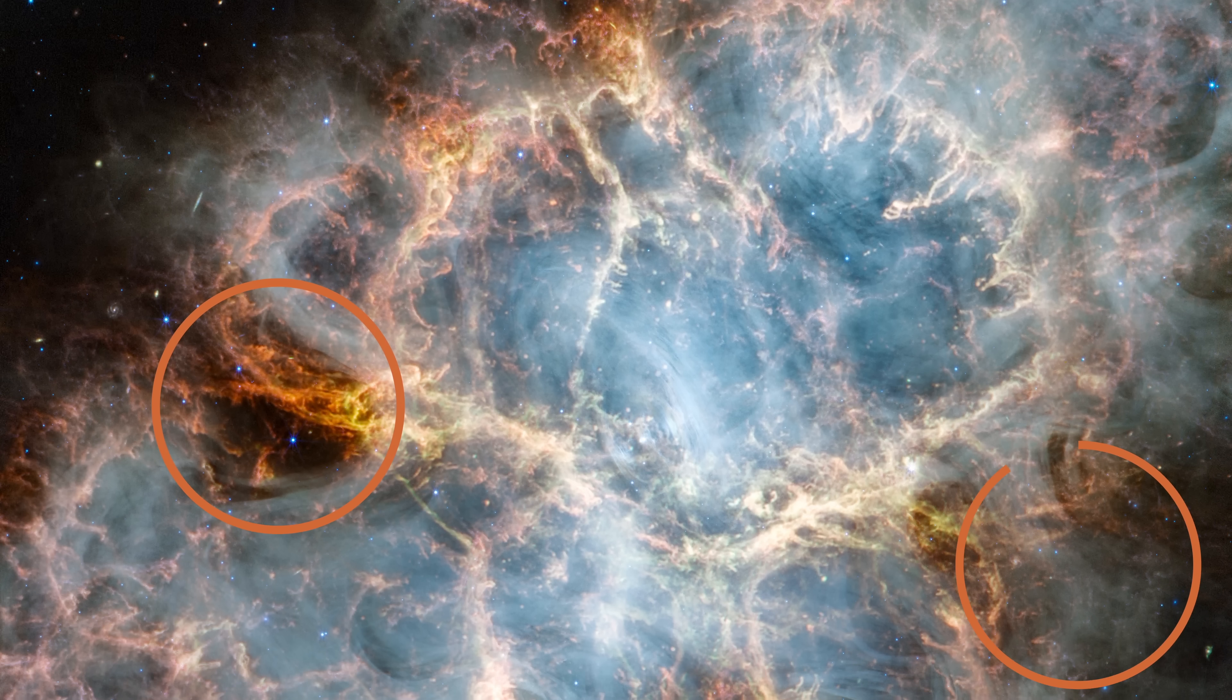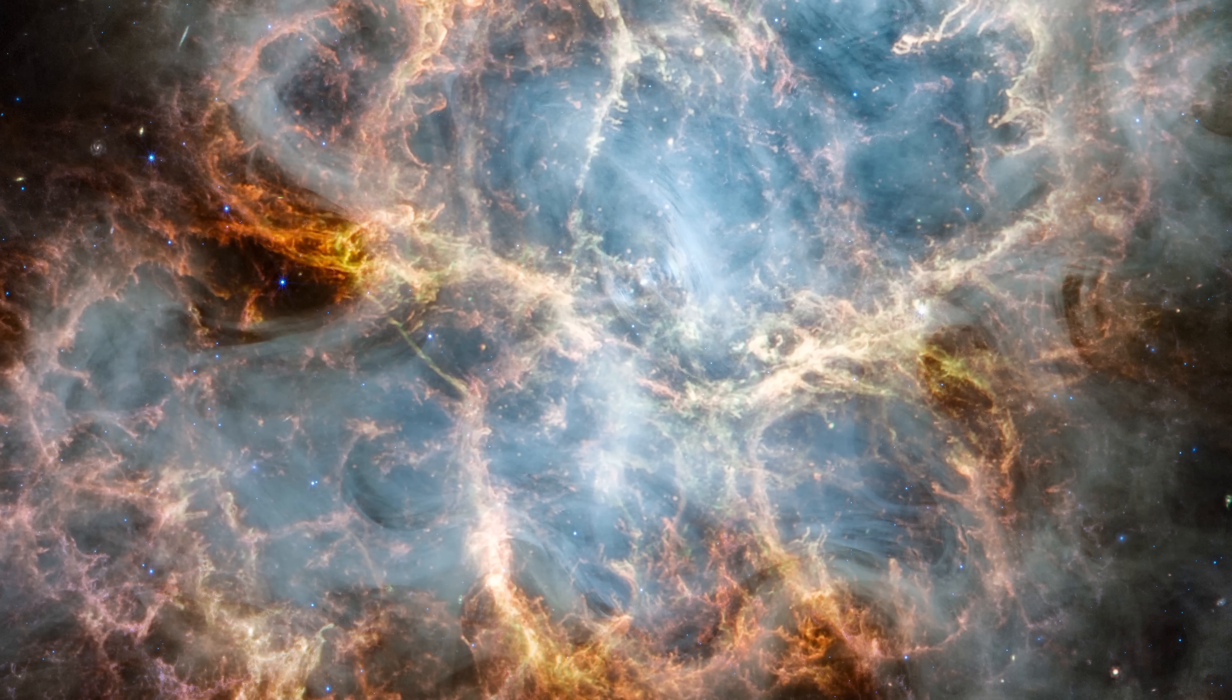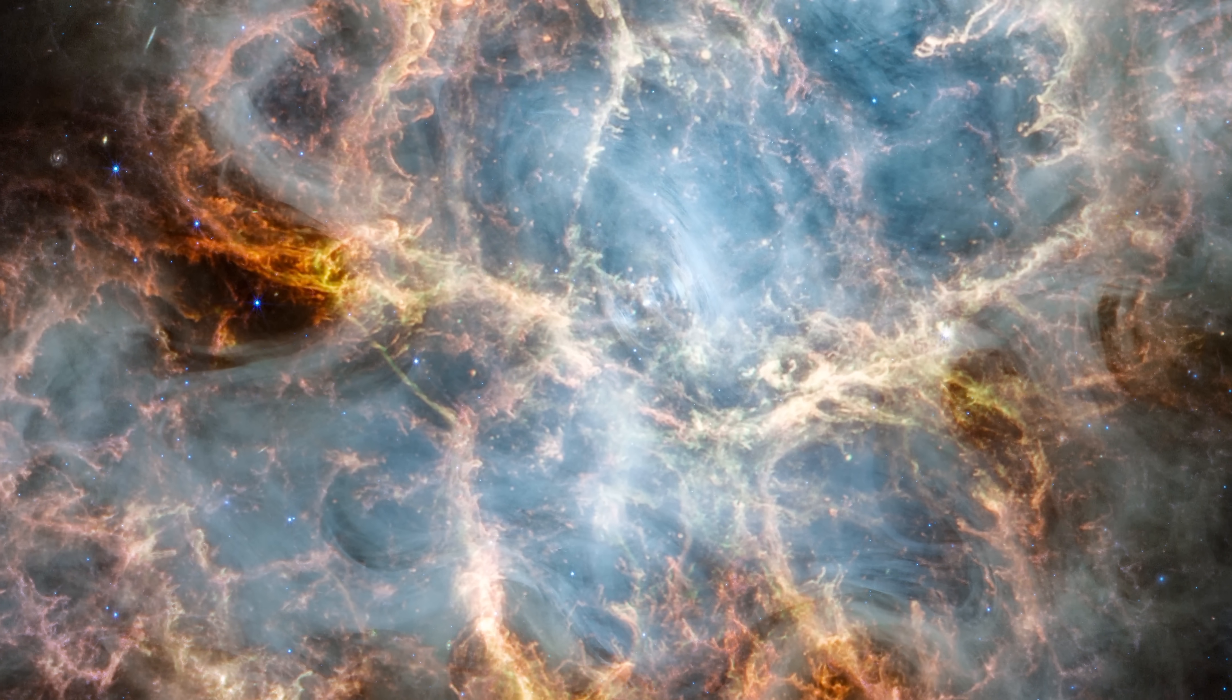Here and here, the nebula appears to narrow. This abrupt slimming may be caused by the confinement of the pulsar wind's expansion by a belt of dense gas.